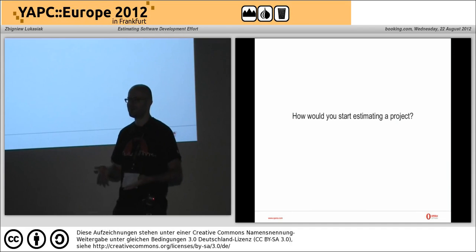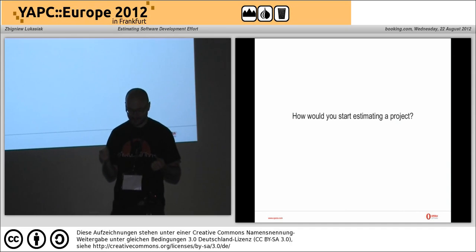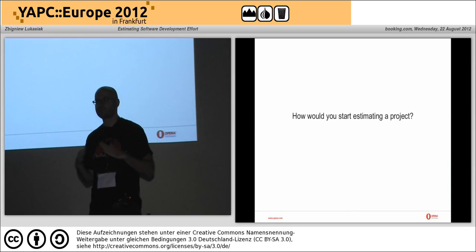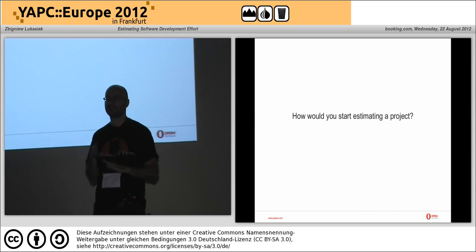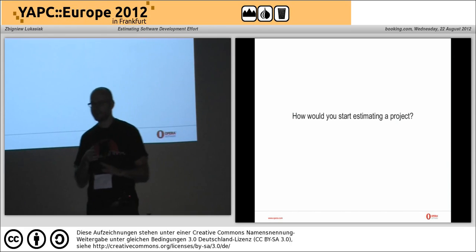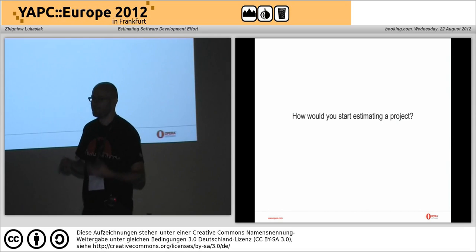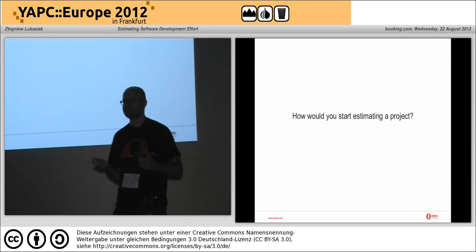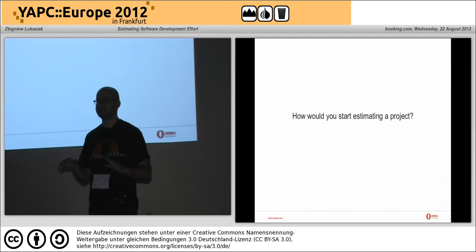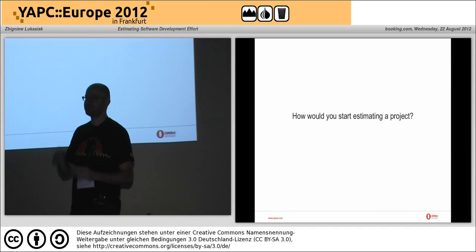Estimation is an objective number - how long it would take if you wouldn't remove anything or change the environment of the project. If the sales guy gives you a number, it has no real relation to the estimation, but it can be your target if it's reasonable. The project manager will then need to remove something to make the estimation meet the target.